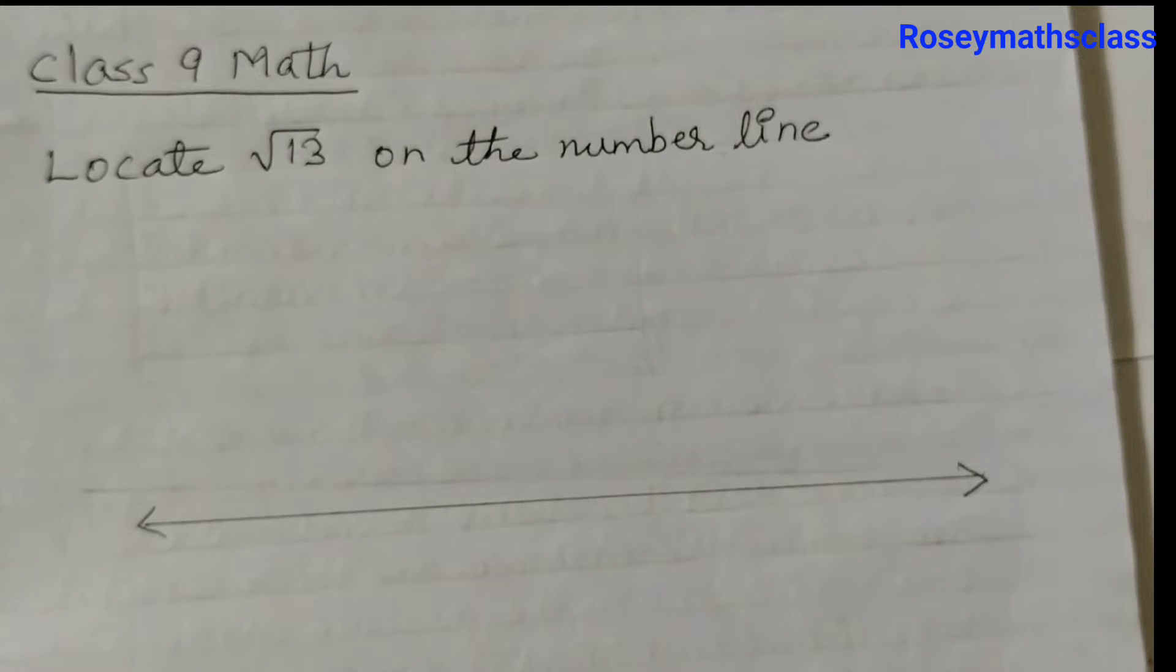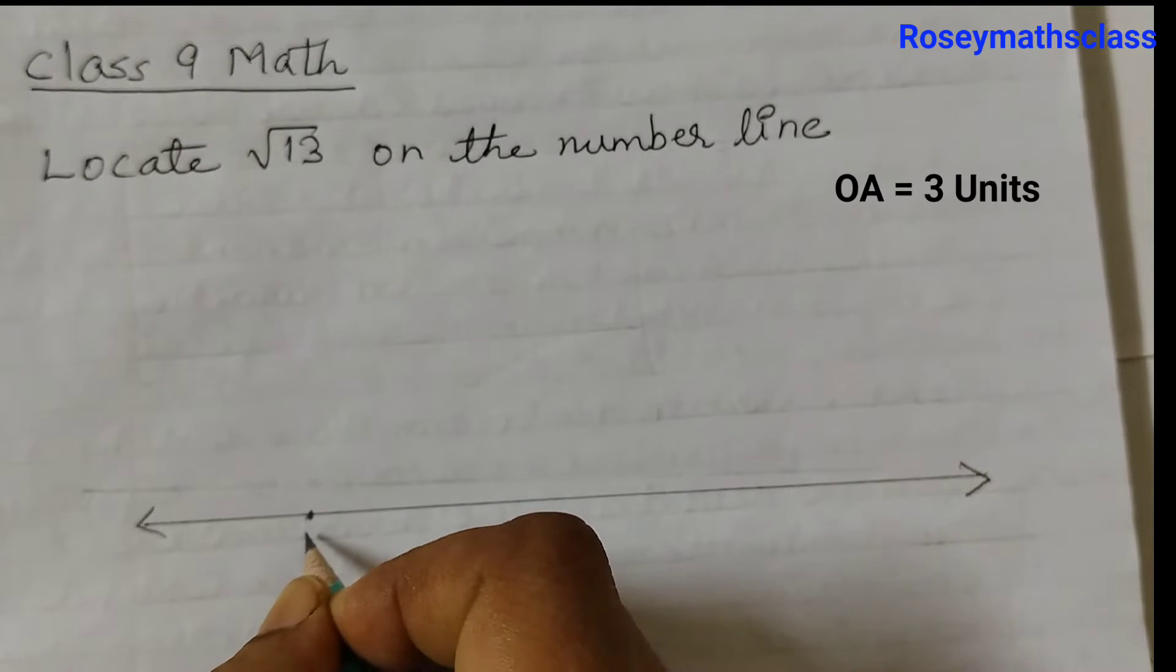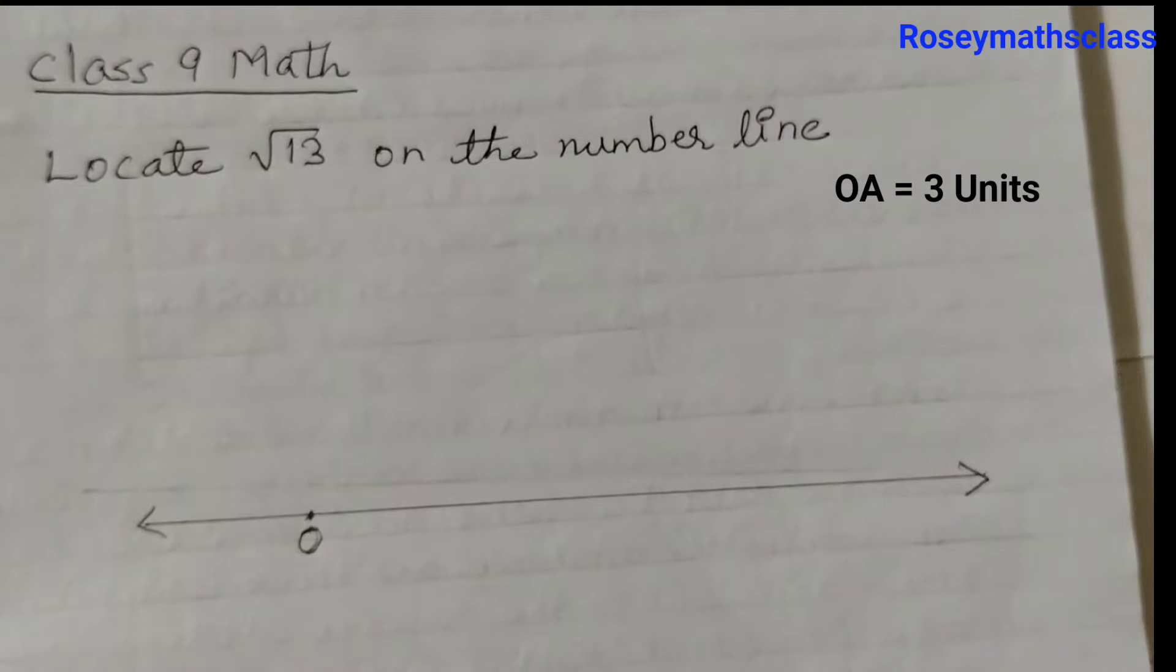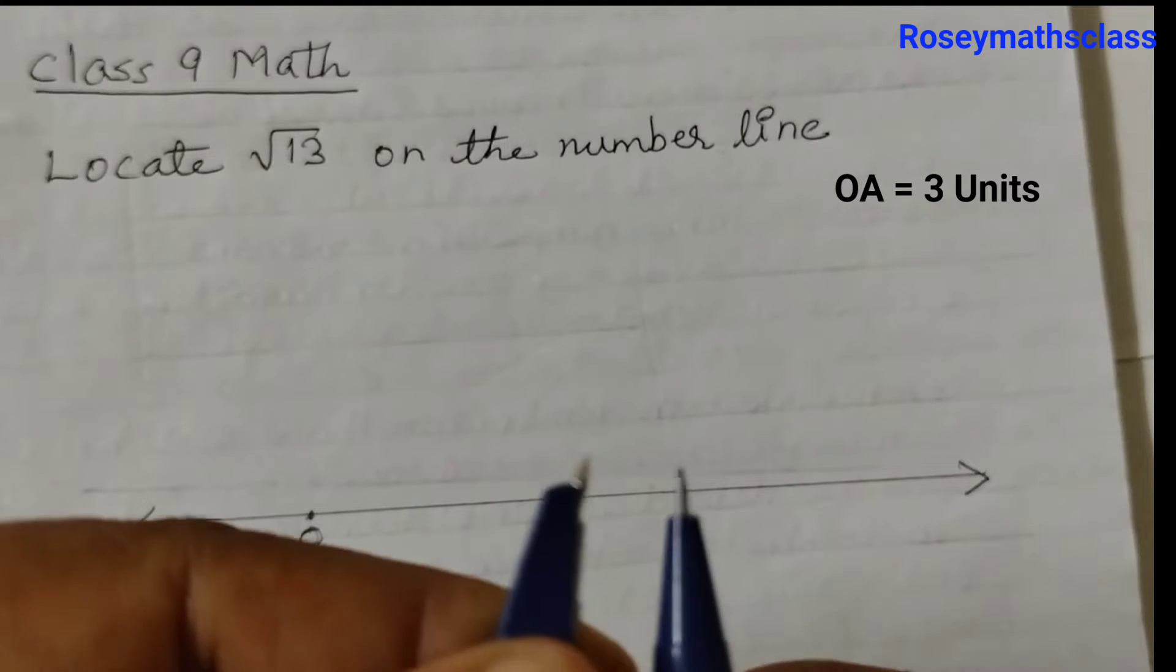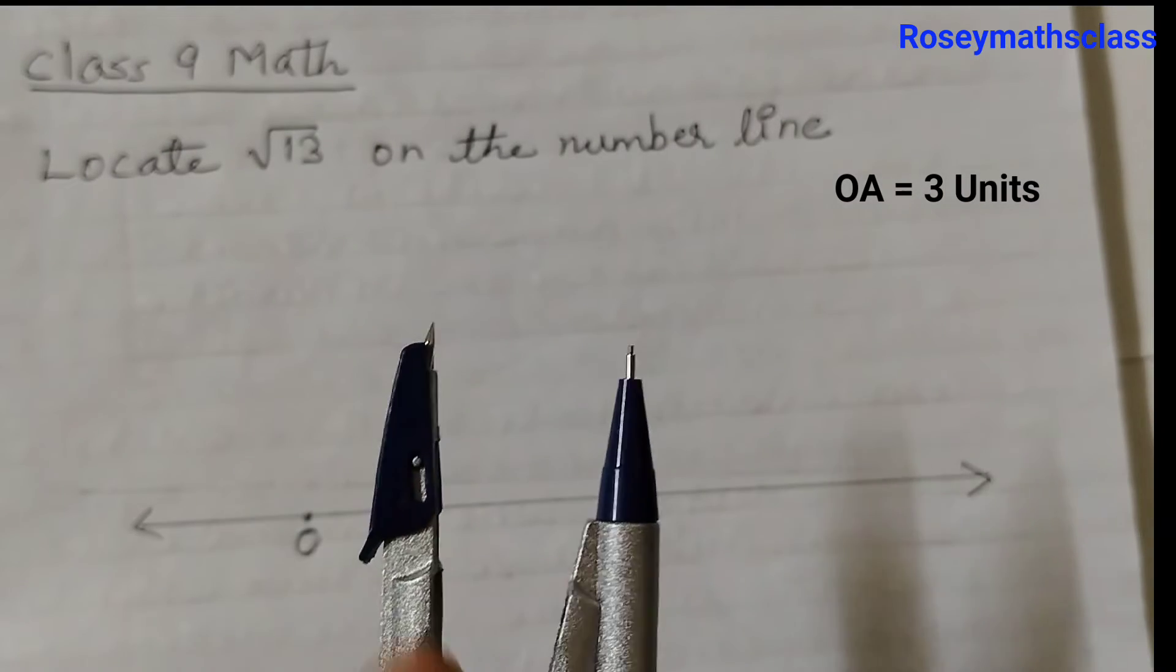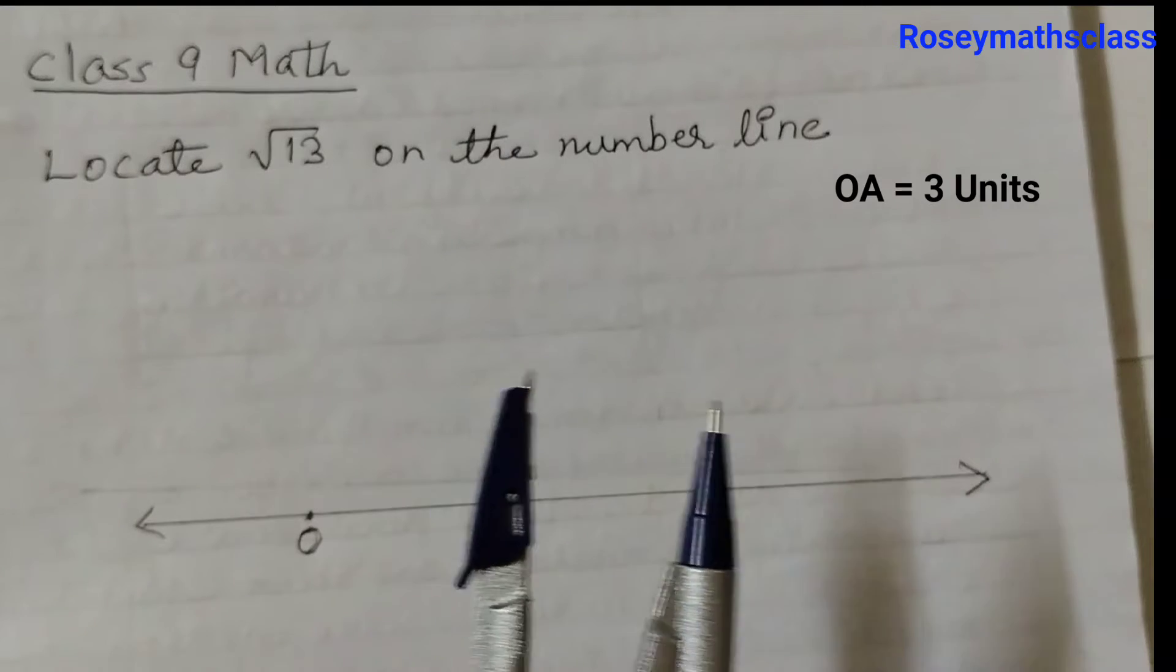On the number line, take OA equals 3 units. Let's take this point as O and we will take OA as 3 units. You can take any measurement; make sure these two points are proper. I am taking this much as the unit length, and then we will draw 3 units.